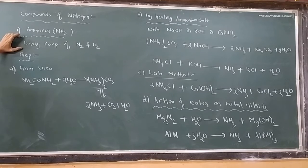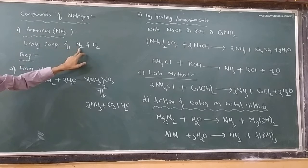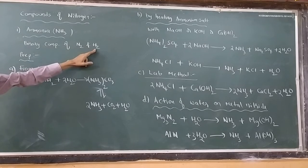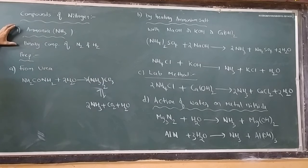Ammonia is a binary compound which is formed by two elements, one is nitrogen and hydrogen in the diatomic state, and how to prepare the ammonia.